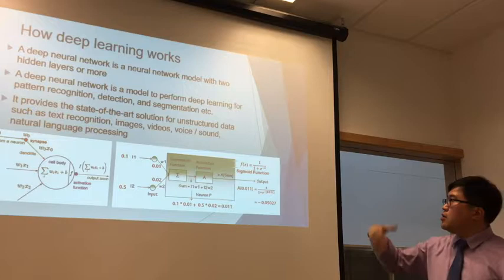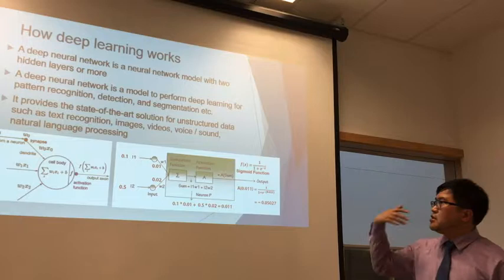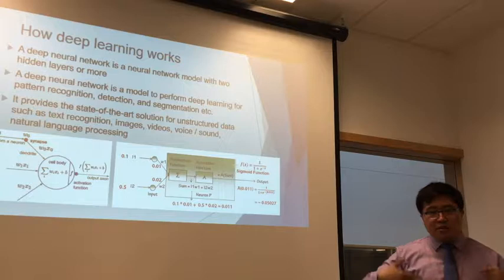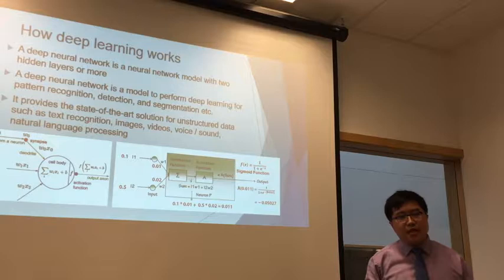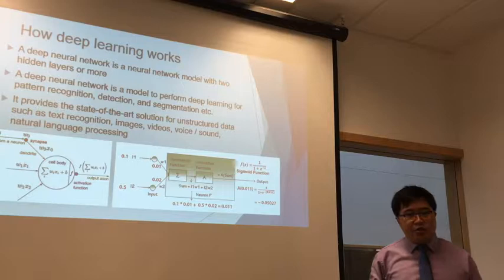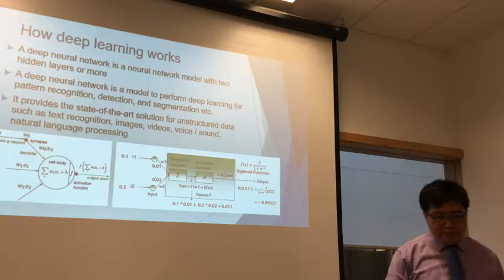There are basically two steps: first, compute the sum; second, choose an activation function to generate the output. For example, we can use a sigmoid function, rectified linear units (ReLU — quite common in visual recognition), or hyperbolic tangent. ReLU is particularly famous and common for visual recognition tasks.